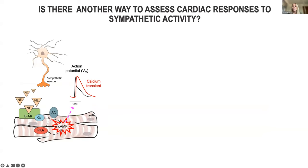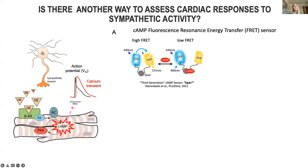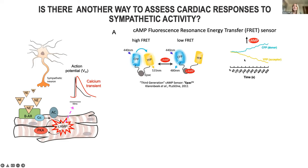Cyclic AMP is an important second messenger for sympathetic control. I figured if we can measure cyclic AMP, can we use it as a tool to assess sympathetic responses throughout the heart? FRET-based imaging can be used to track sympathetic responses throughout the heart. How this works is there's a pair of closely associated fluorescent fluorophores. Because they are so closely associated, they transfer energy from one fluorophore to the other. These are bound to a molecule of interest. When cyclic AMP binds to this molecule, it undergoes a conformational change, and the two fluorophores separate, giving an increase in donor fluorescence and a decrease in acceptor fluorescence.